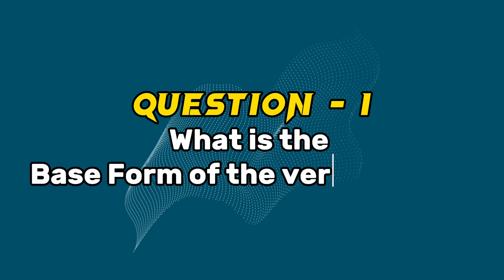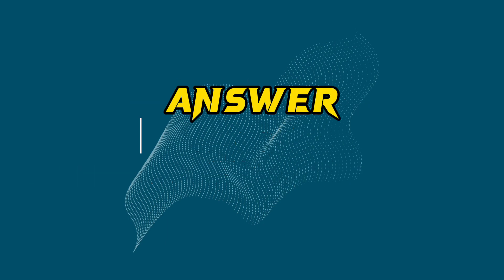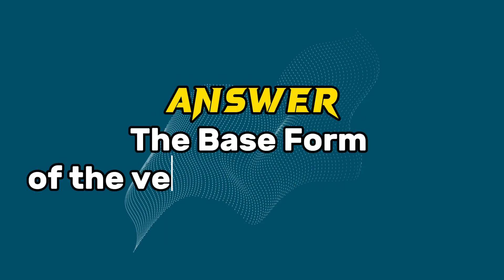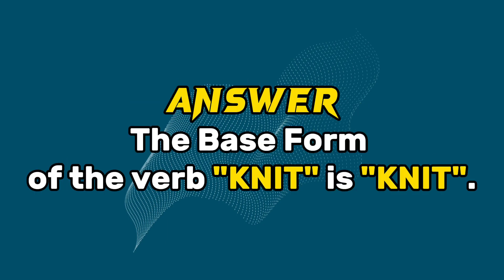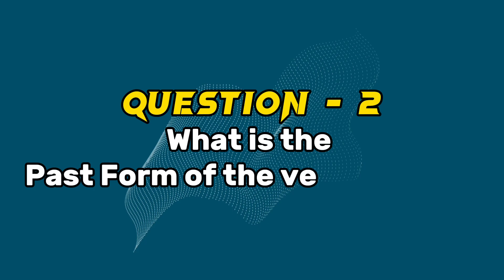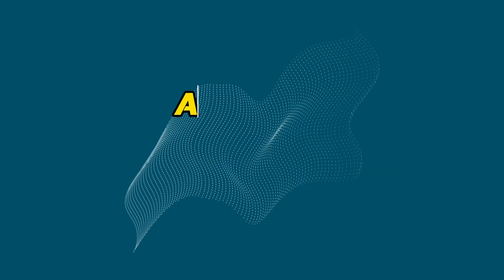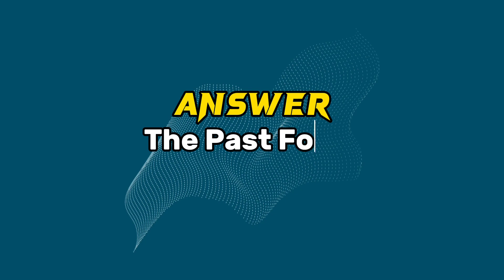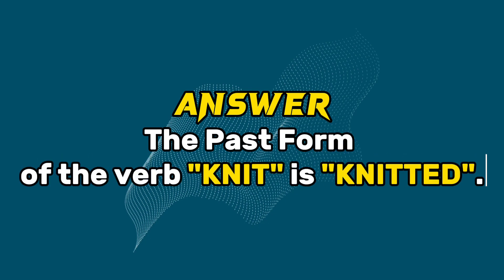Question 1. What is the base form of the verb knit? Answer. The base form of the verb knit is knit. Question 2. What is the past form of the verb knit? Answer. The past form of the verb knit is knitted.